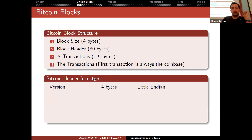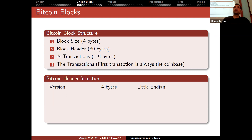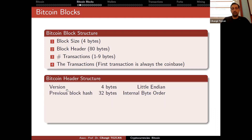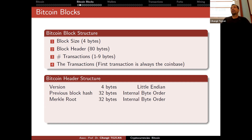The header consists of 80 bytes. It starts with the version number — a four-byte value. When we update the software, we generally update this version number so we can understand which miner is using which version. Previous block header hash is 32 bytes, and Merkle root is also a hash value of 32 bytes. If you multiply 32 by 8, you get 256, because we are using SHA-256.